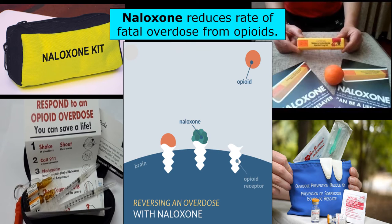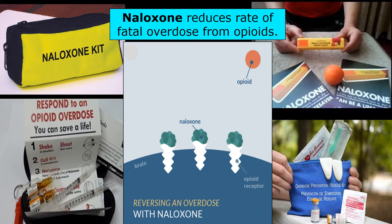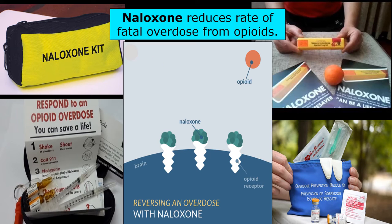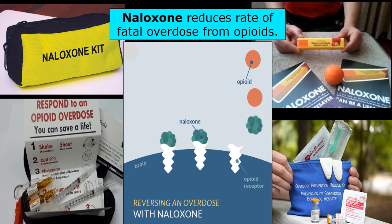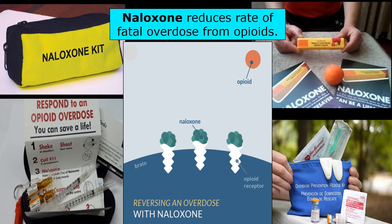One modern advance is the chemical naloxone, which can actually save people's lives from a fatal opioid overdose. What naloxone does is block the opioid receptors in the brain, thereby stopping an overdose from occurring.